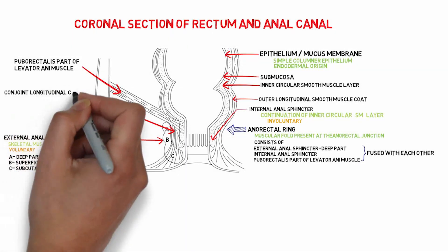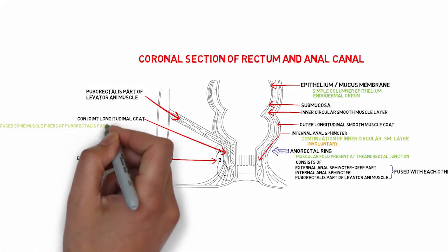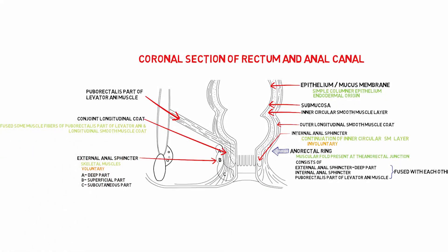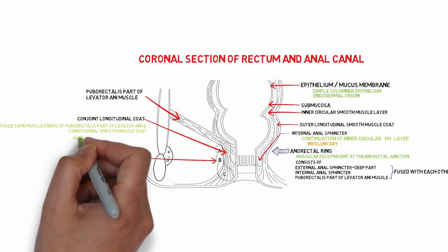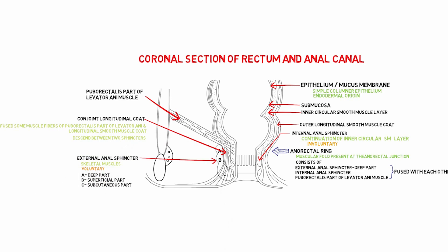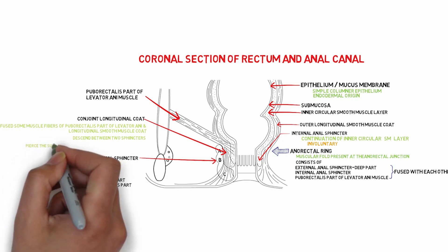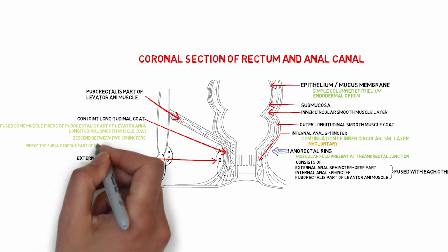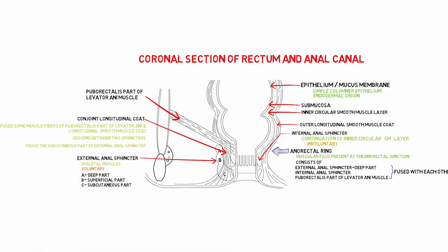The conjoint longitudinal cord is formed by the fusion of the puborectalis part of the levator ani and the longitudinal smooth muscle cord. It is a muscle layer that descends between the two sphincters and divides into septa at the level of the white line of Hilton. The septa of the conjoint longitudinal cord pierce the subcutaneous part of the external anal sphincter and attach to the perineal skin.